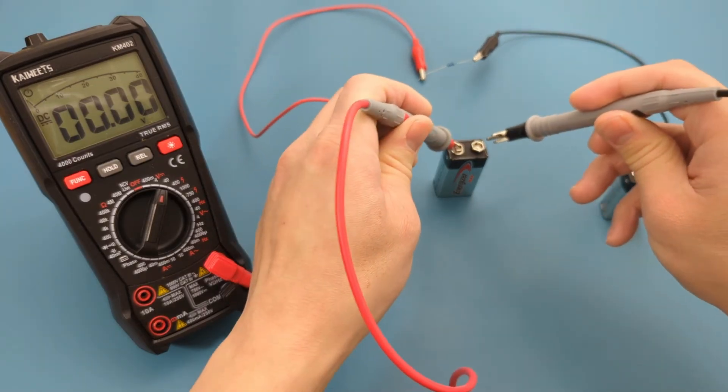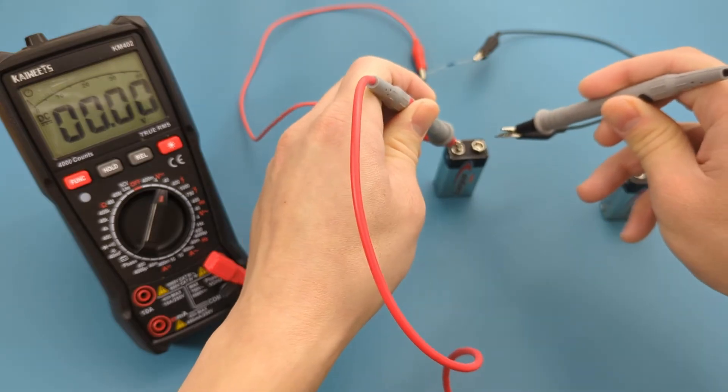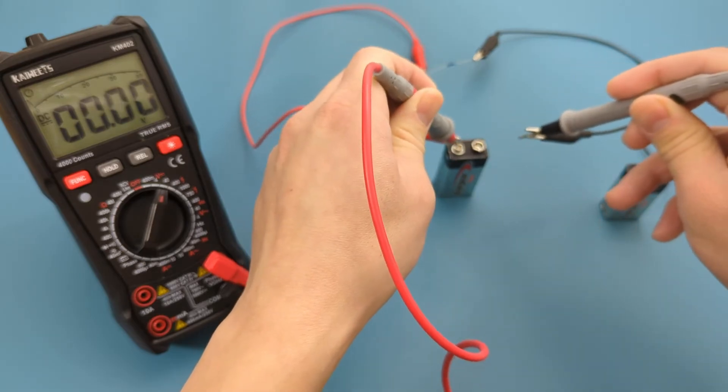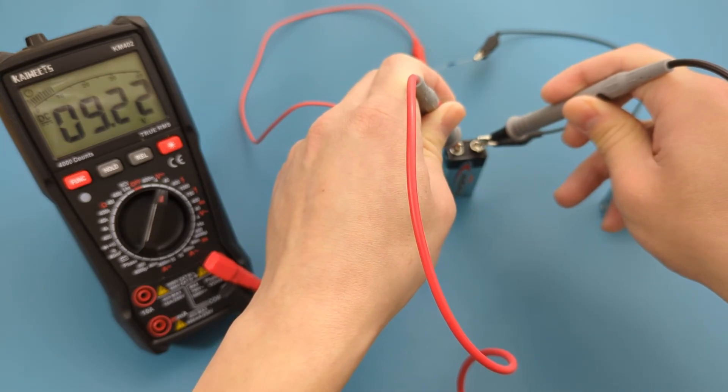Touch the red probe lead on the battery's positive side and the black probe lead on the negative side. As observed, there is a voltage drop, resulting in a reading that is slightly lower than the earlier voltage measurement.